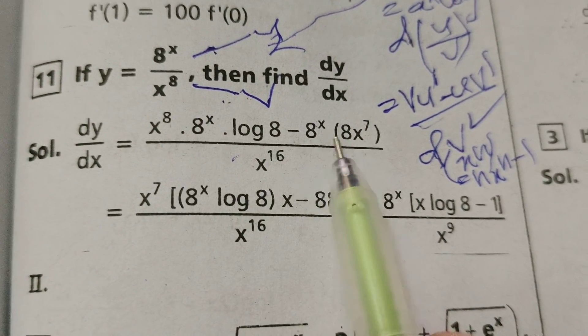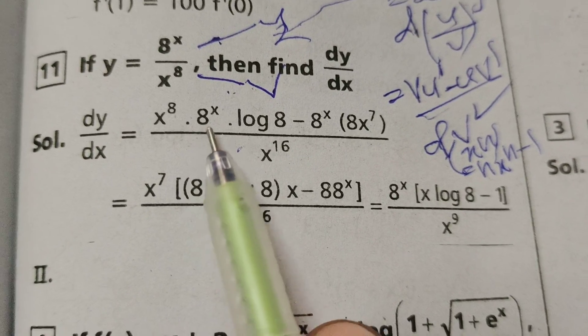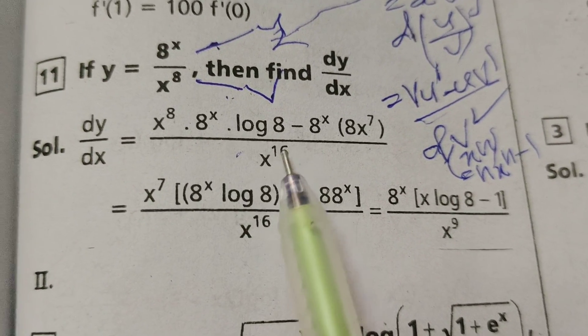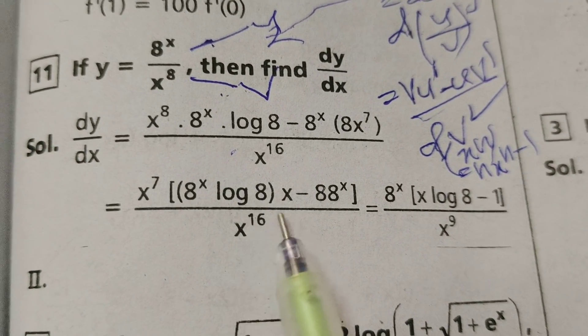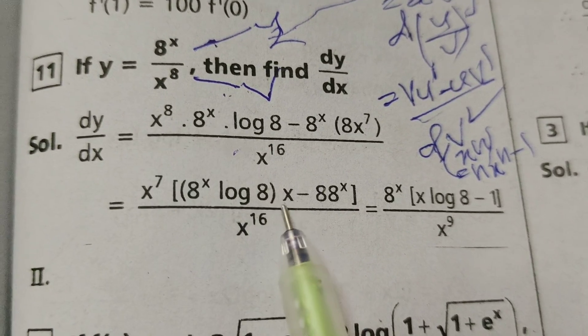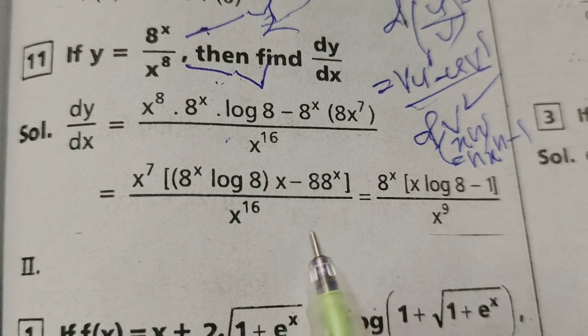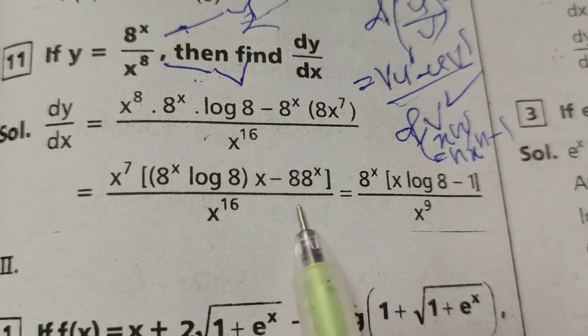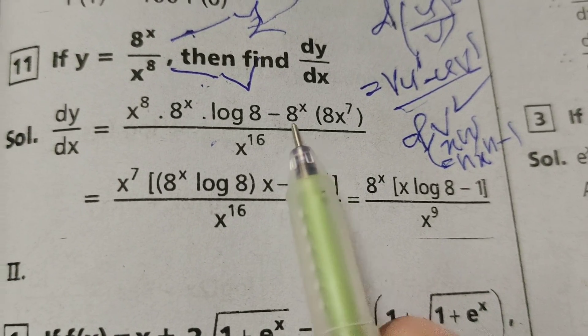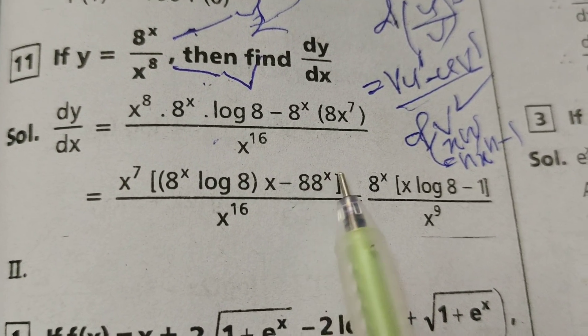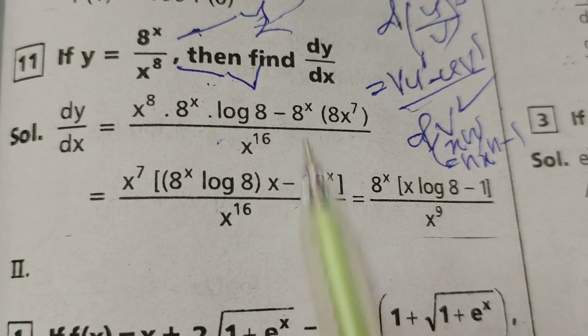x power 7 into 8 power x log 8 into x, again remaining x is there, minus here 8 into 8 power x.